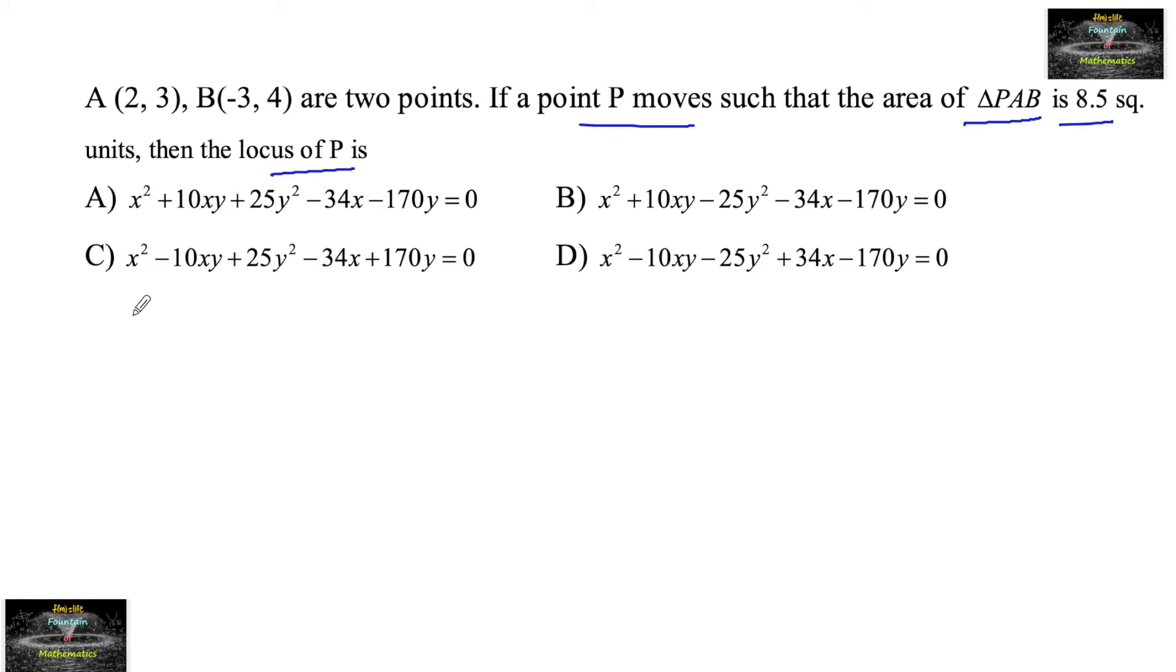So given here two points A and B and there is a point P such that the area of triangle PAB is 8.5 square units.